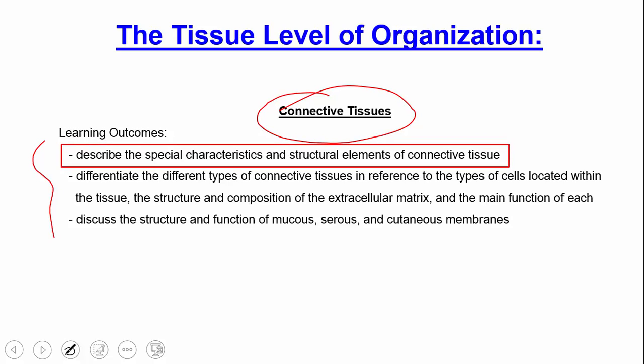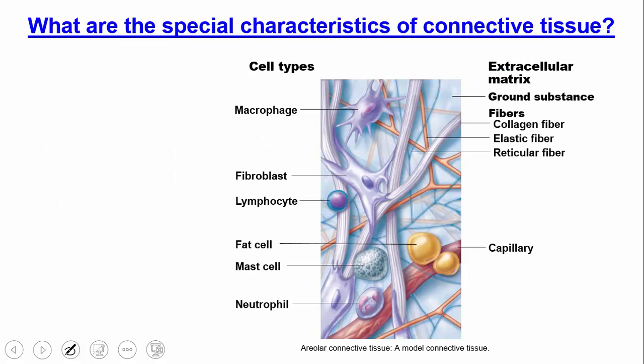Let's start talking about the special characteristics of connective tissue. In connective tissue, there are very few cells and a ton of extracellular matrix, relative to each other and relative to other types of tissues.